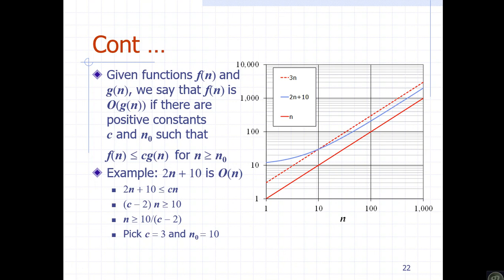We choose constant c equal to 3. Then 3 minus 2 equals 1, and 10 over 1 equals 10. So n-naught is equal to 10. This means for all n greater than or equal to 10, the condition holds with c equals 3.